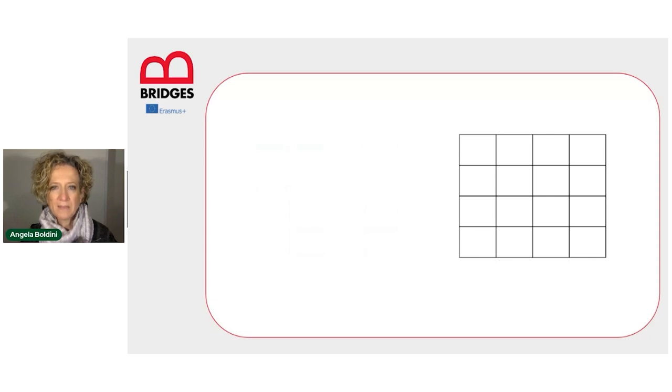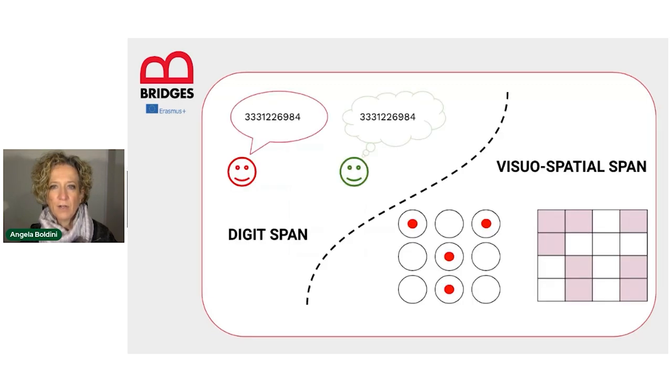Short-term memory capacity can be behaviorally measured in terms of digit span, i.e. how many digits one can remember in the correct sequence, or in terms of visual spatial span, i.e. the ability to reproduce a certain spatial sequence or a visual pattern correctly.